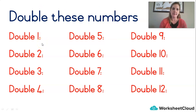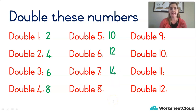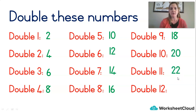Double 1 is 2, double 2 is 4, double 3 is 6, double 4 is 8, double 5 is 10, double 6 is 12, double 7 is 14, double 8 is 16, double 9 is 18, double 10 is 20, double 11 is 22, double 12 is 24. If those bigger numbers were tricky for you, go back and watch the lesson where we did some doubling.